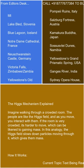The Higgs Mechanism explained: imagine walking through a crowded room. The people are like the Higgs Field, and as you move, you interact with them. If the room is very crowded, it's harder to move, which can be likened to gaining mass. In this analogy, the Higgs Field slows down particles moving through it, which gives them mass.